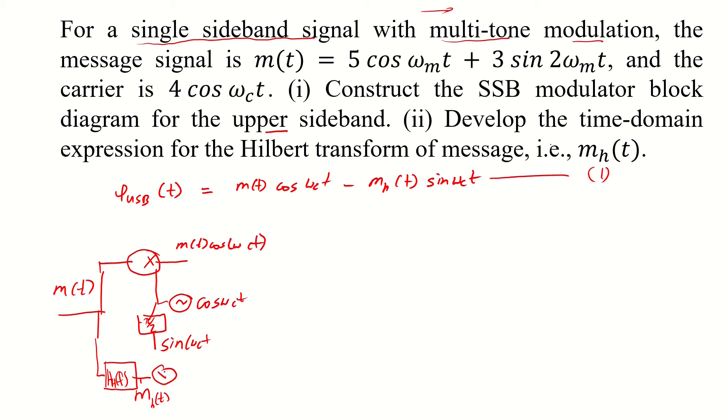And then in the lower branch we have again a multiplier and the output of that multiplier would be simply this signal that is m h of t sin omega ct.